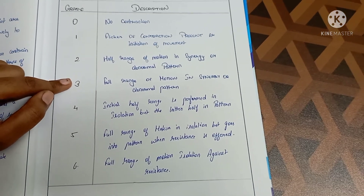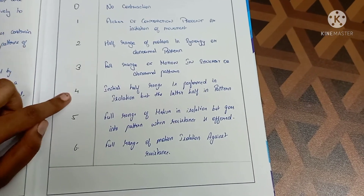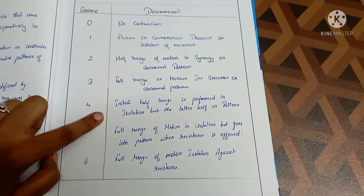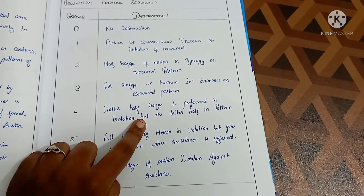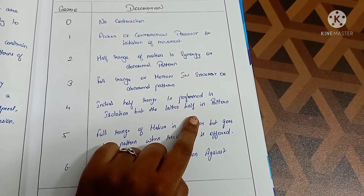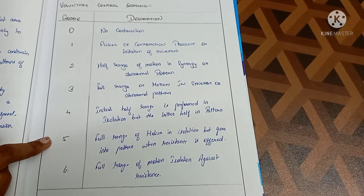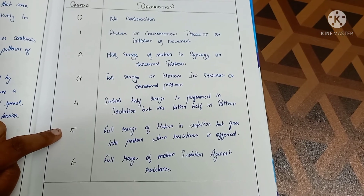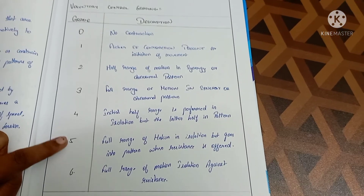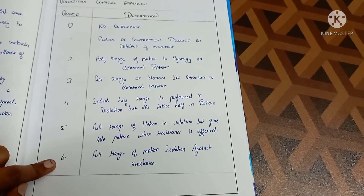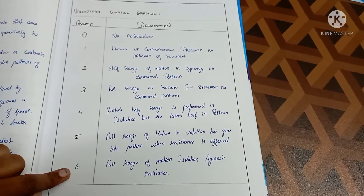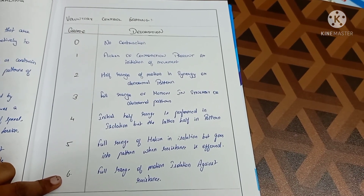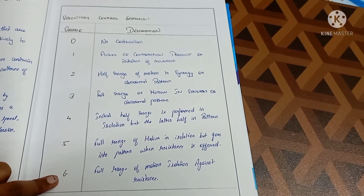In Grade 3, there is full range of motion but in the abnormal synergy pattern. In Grade 4, the initial half range of movement will be normal — that is in isolation — but the remaining range will be in the abnormal synergy pattern: starting normal, then becoming abnormal. In Grade 5, the full range of motion in isolation is normal, but when you apply resistance it will go into the abnormal pattern. In Grade 6, full range of motion in isolation against resistance — even with resistance applied, it remains normal.